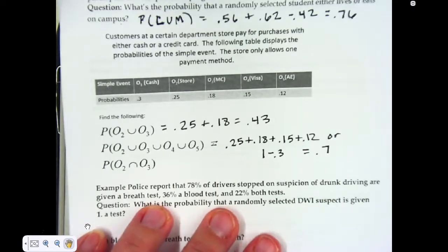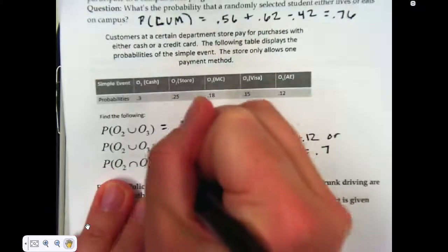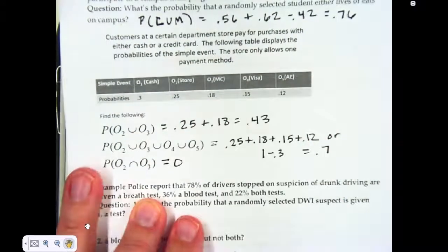In this case, we're considering these disjoint events. The store only allows one payment method. You cannot pay with a store credit card and a MasterCard. These cannot happen at the same time. Therefore, they're disjoint events, and that's 0.